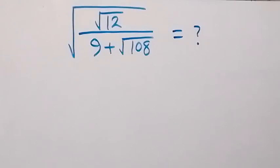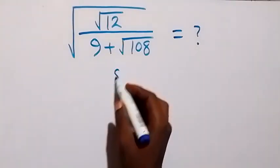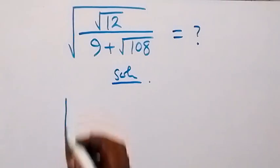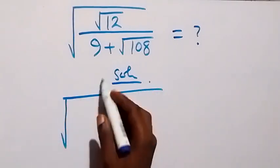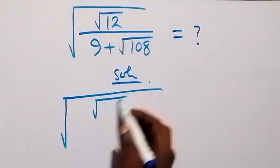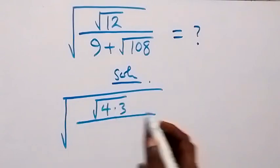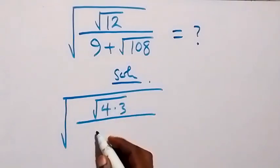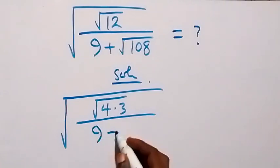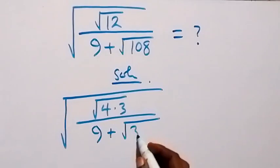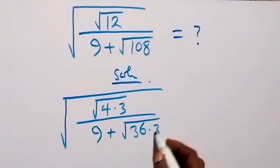Hello y'all, welcome. We're going to solve this nice problem involving square roots. We can rewrite this as square root of — root 2 here can be written as root 4 times 3, then divided by here we still have the denominator, then plus root — you can separate this as 36 times 3.